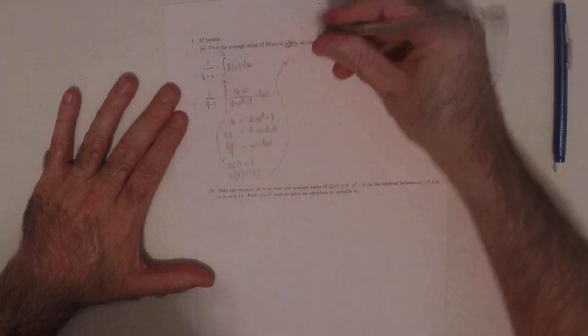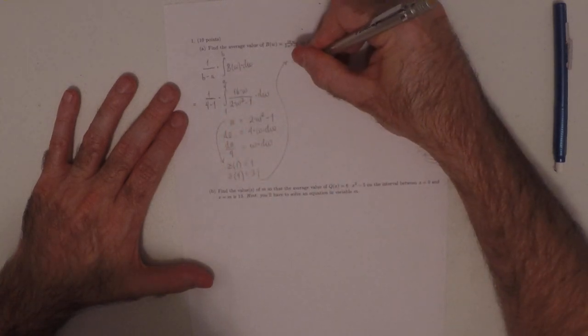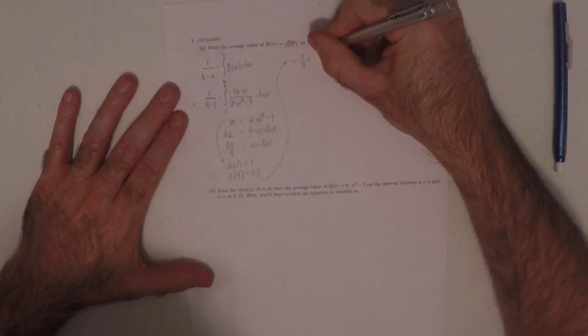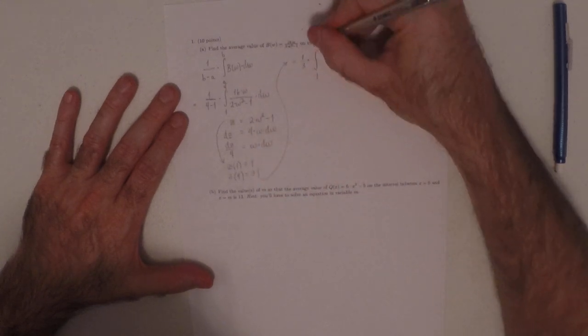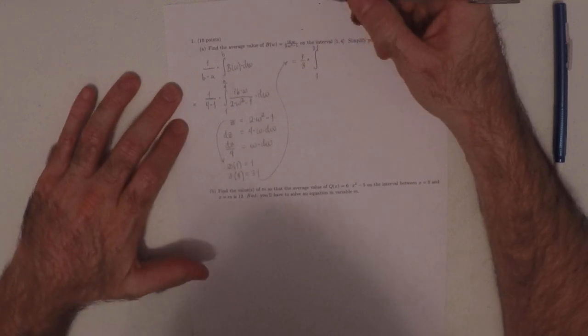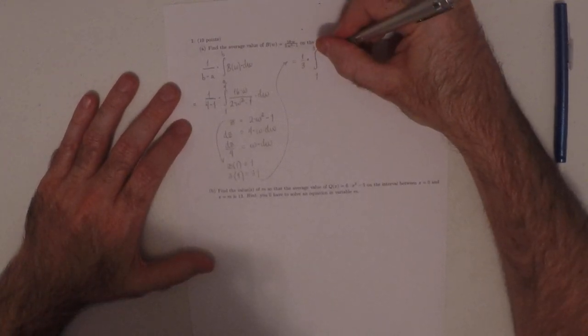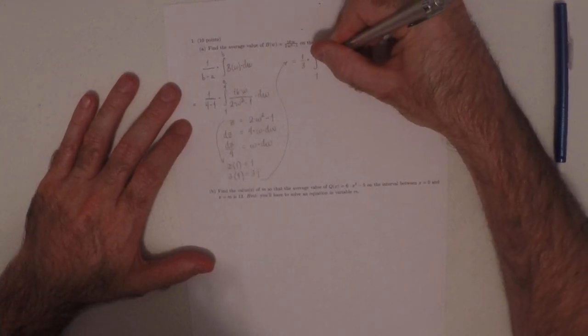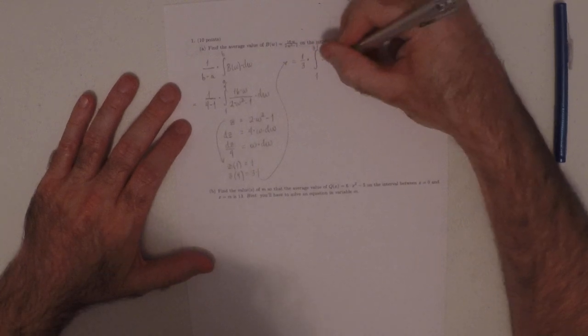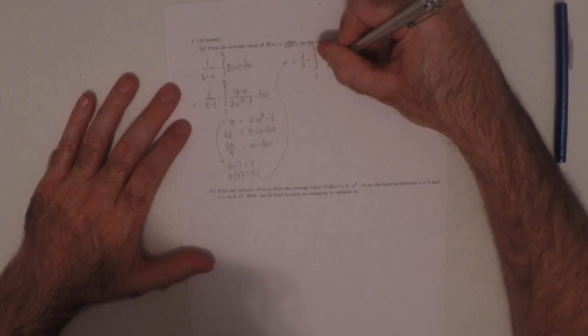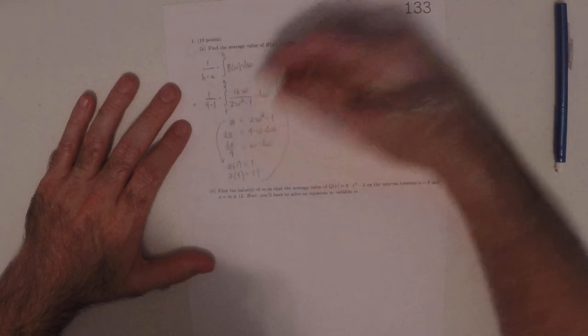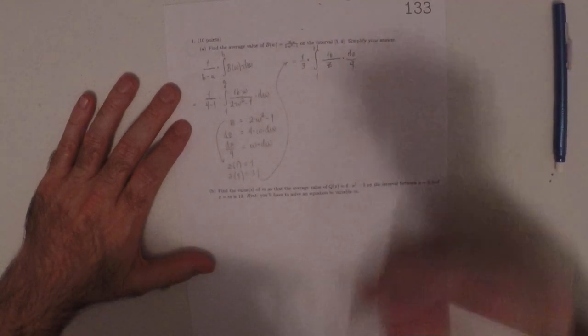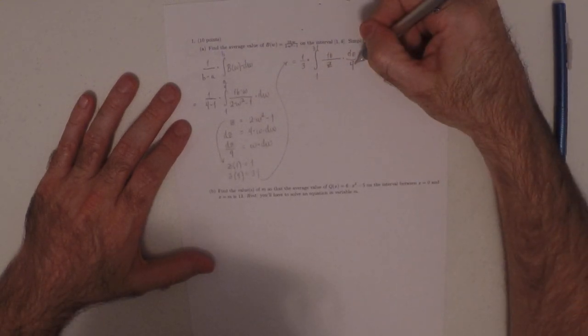Performing that substitution, that'd be a third multiplied by integral 1 to 31. The 16 just hangs out. So that'd be 16, and then over z. And then w dw becomes dz over 4.